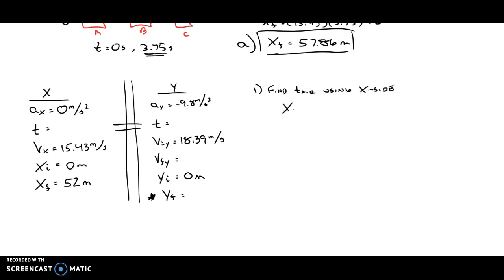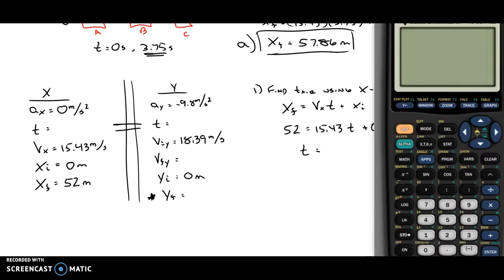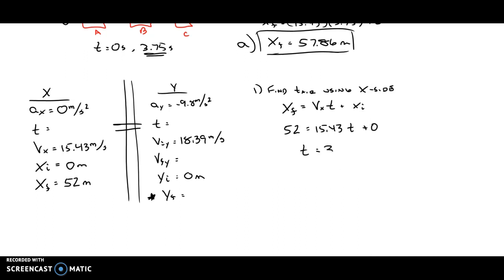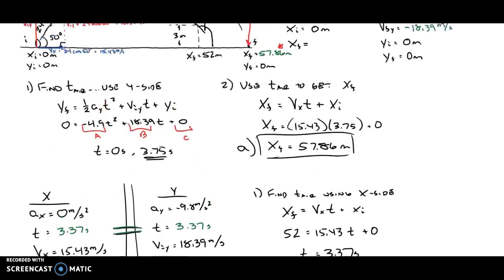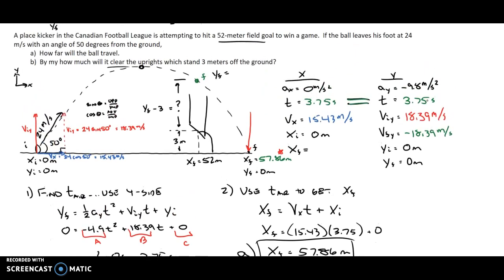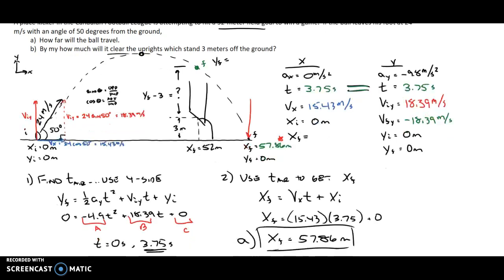In the X direction we have only one equation since there's no acceleration: X_final = V_x × t + X_initial. So 52 meters equals 15.43 times t plus zero. Plugging into our calculator, 52 divided by 15.43 gives us 3.37 seconds. That's the time it takes the ball to reach the uprights. This bridges to the Y side, and it makes sense because the total time to reach the ground was 3.75 seconds — so it should take a little less time to reach that position.